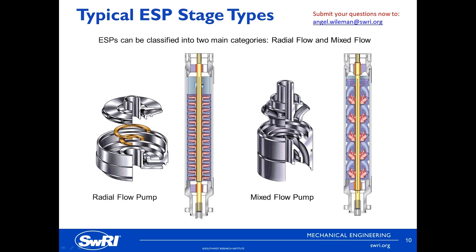The ESP internals can be classified into two main categories: radial flow and mixed flow pump stages, with each having benefits depending on the well conditions. Radial pump stages are shorter and thus have more stages installed for a given pump length. Radial pumps are typically associated with lower flow rates and a production fluid that is low in solids and gas content. Because they're packed so tight, the interfaces are very small, so they likely wouldn't be great at handling solids or gases.